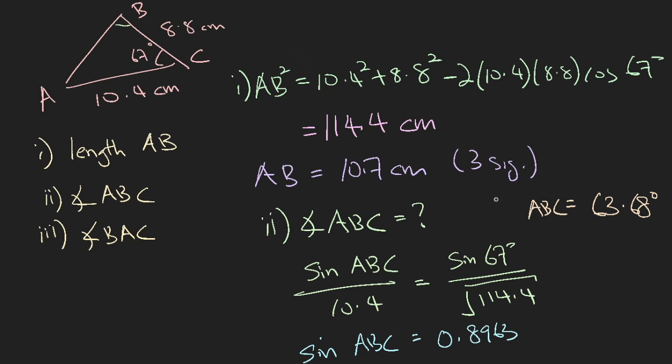So angle ABC will be 63.68. Now for the last part, to find angle BAC, it is trivial because you are looking for the only unknown angle in a triangle. So it's simply just 180 degrees minus the sum of the two angles that you already know. So 67 degrees plus 63.68 degrees. And your answer will be 49.3 degrees. So to stick to a convention, for non-angles, you can use three significant figures. For angles, you can leave to one decimal place. So to be consistent, ABC should be equal to 63.7 degrees.